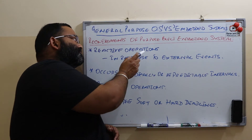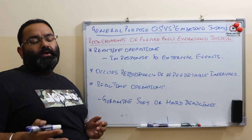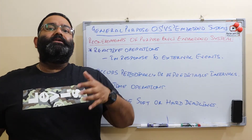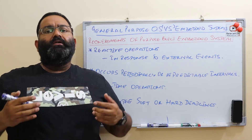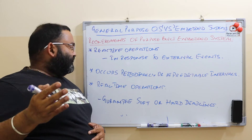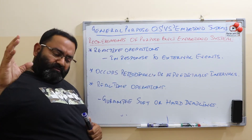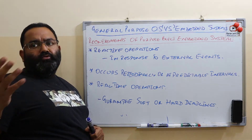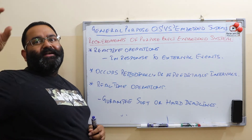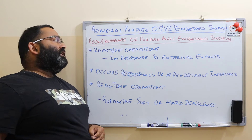The next requirement for embedded systems is reactive operations. Most operations in embedded systems are reactive, meaning they respond to some external event. Operations performed in response to an external event are called reactive operations. They can occur periodically at predictable intervals — for example, a system that takes the temperature of a room every two hours automatically reacts and records the temperature at that periodic interval.